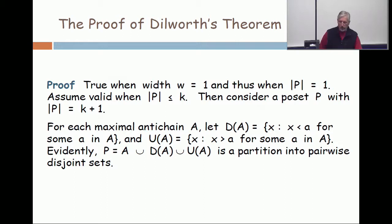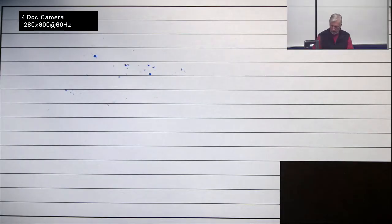All right, so now let's look at this notation. For every maximal anti-chain, you've got two sets. Down from A, elements less than something in A, and you have up from A, things that are bigger than something from A, and then you always get a partition of the poset into A, union down from A, union up from A.